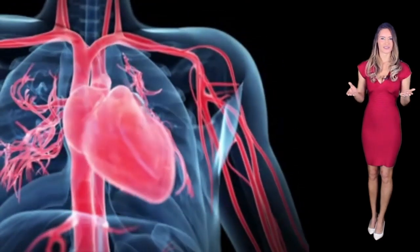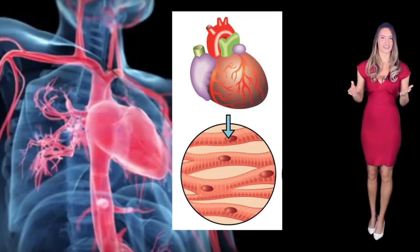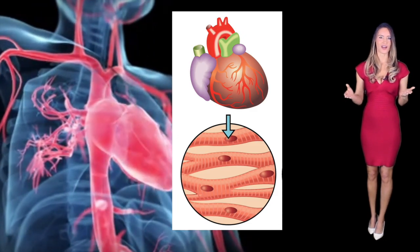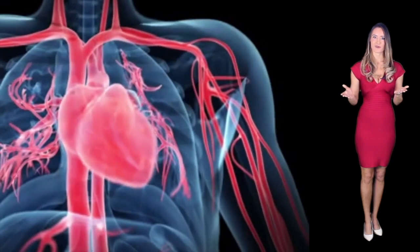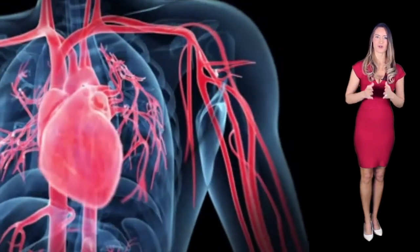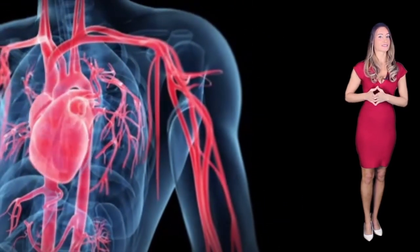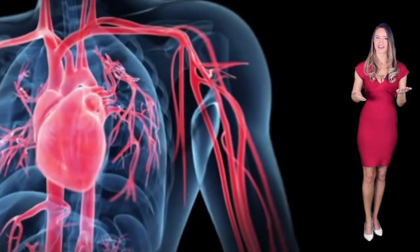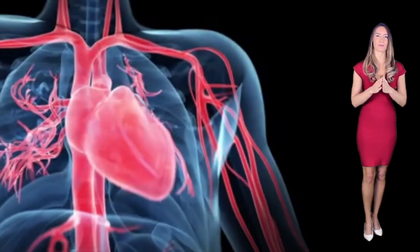Under the microscope, cardiac muscle appears striated, meaning the fibers of the cell are in a parallel arrangement. This makes the muscle strands or striations visible. Moreover, the parallel arrangement makes it possible for the muscle to contract and relax, which is why the heart is so effective in pumping blood throughout the body.